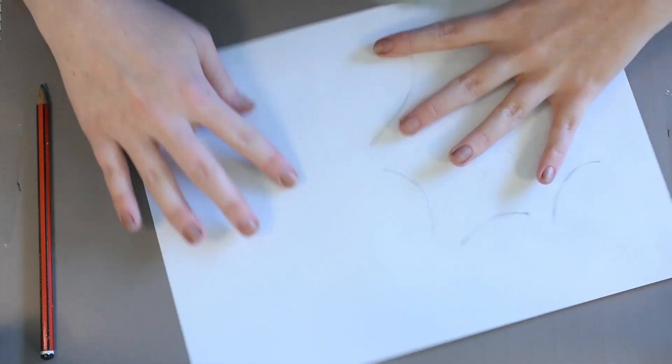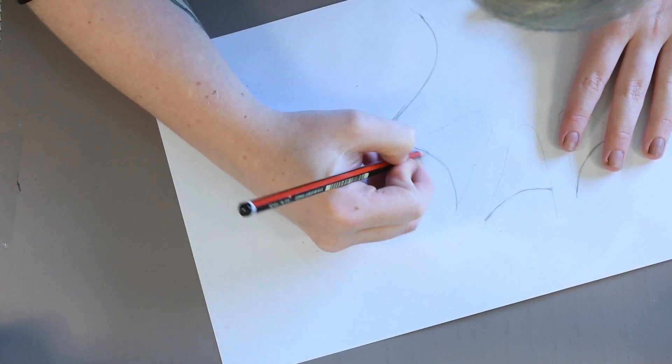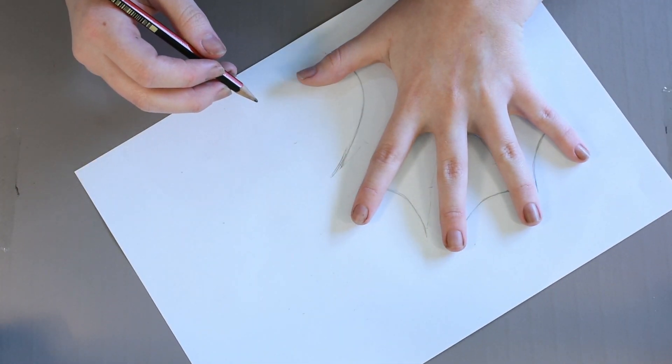Once you're pretty happy with how your shapes look, try putting your hand back on and off, looking at how the webs look. Change things if you think you need to.